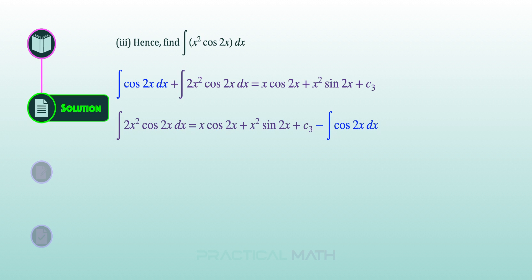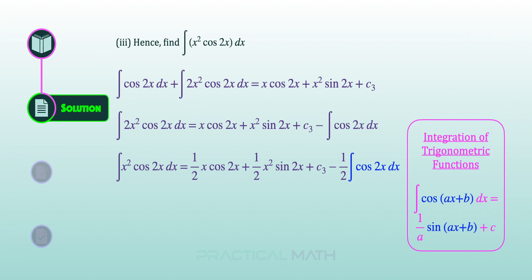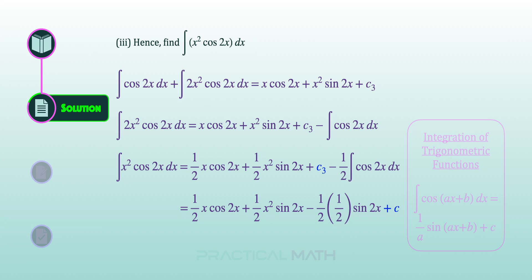Next, we shift the integral of cosine 2x to the right side of the equation. Bearing in mind that we need to make the integral of x squared cosine 2x the subject, we divide the entire equation by 2. To complete the integration, we integrate cosine 2x: by the integration of trigonometric functions, integrating cosine(ax + b) gives sine(ax + b) divided by a. So integrating cosine 2x gives sine 2x multiplied by one half, plus constant c. And here is the anti-derivative of x squared cosine 2x.